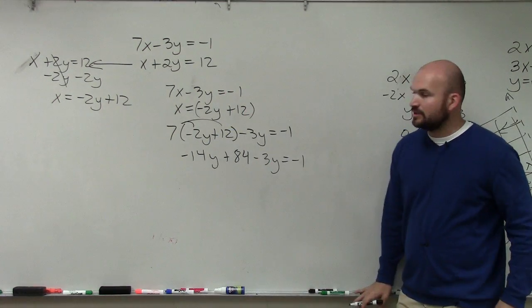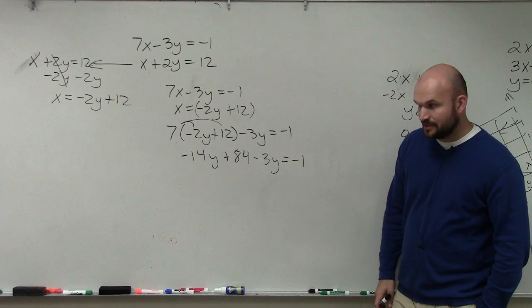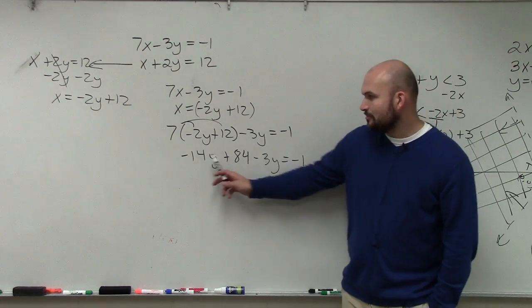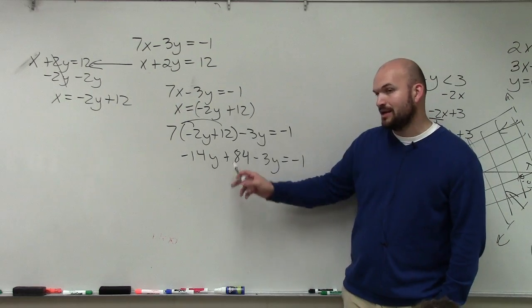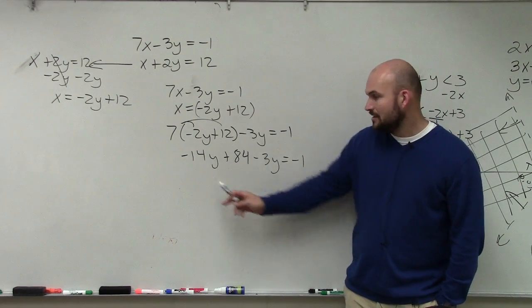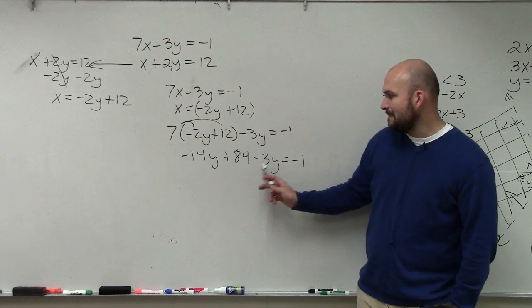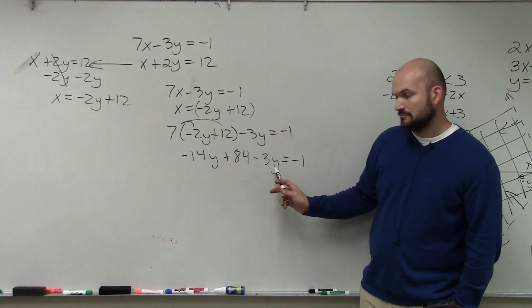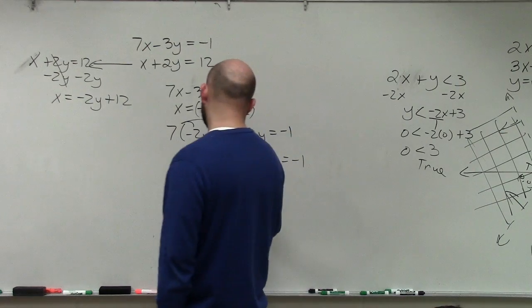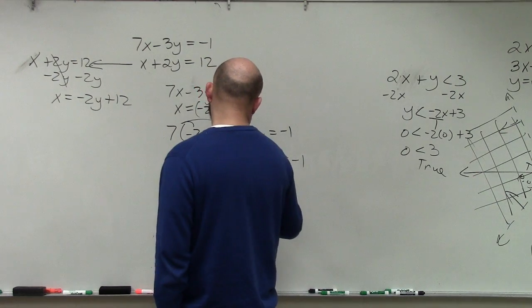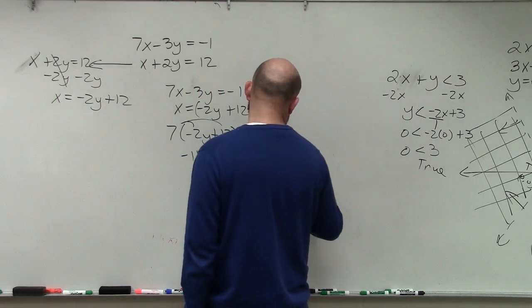Now here's another one of the more common mistakes students make. Remember, guys, these variables are on the same side. You don't add 14 or add 3y to get rid of them. You can just combine these. That's negative 14y minus 3y, right? So that's going to become negative 17y. Plus 81 equals negative 1.